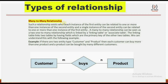Many-to-many relationship: such a relationship exists where each instance of the first entity can be related to one or more than one instances of the second entity, and a single instance of the second entity can also be related to one or more than one instances of the first entity. A many-to-many relationship can be seen as two one-to-many relationships linked by a linking table or associative table. The linking table contains fields that are the primary keys of the other two tables.